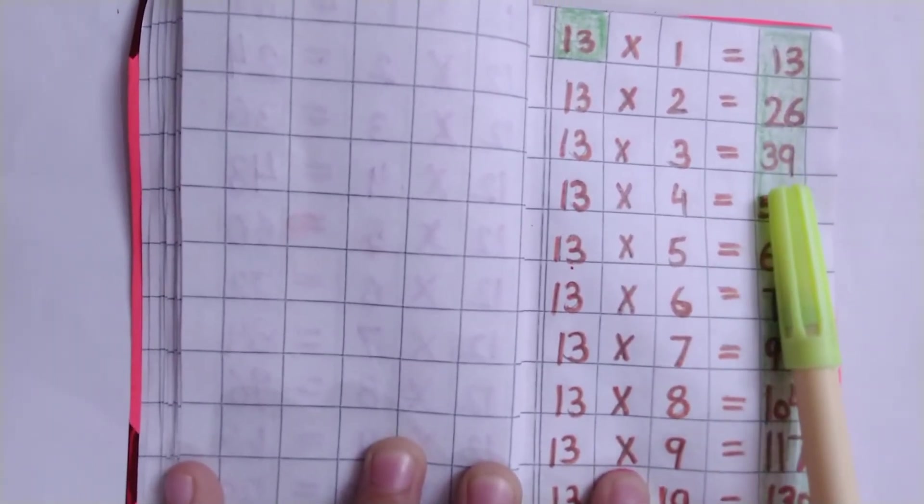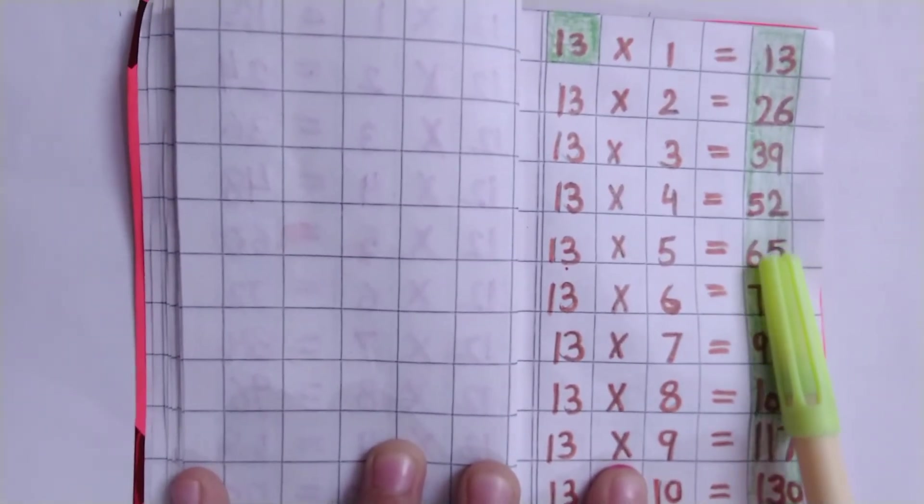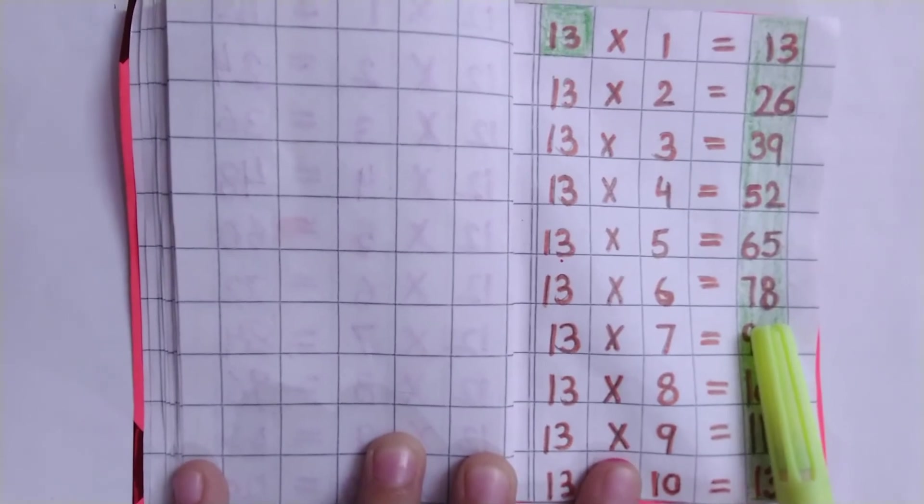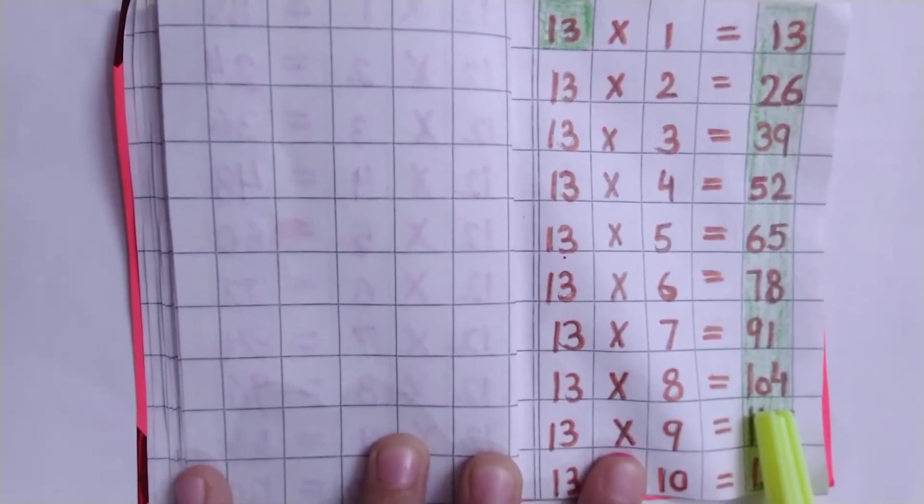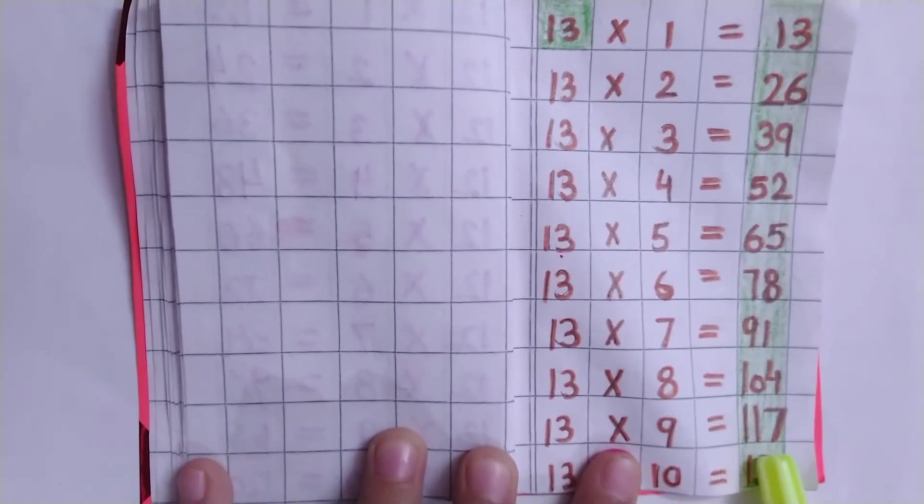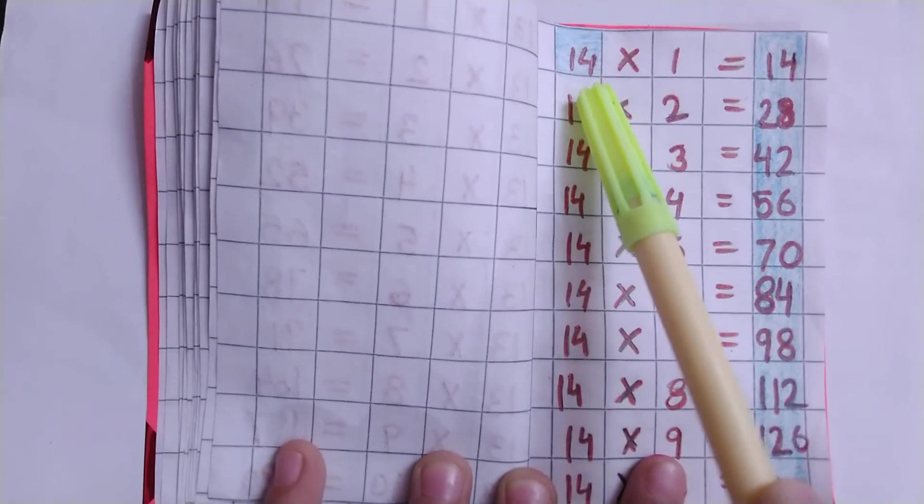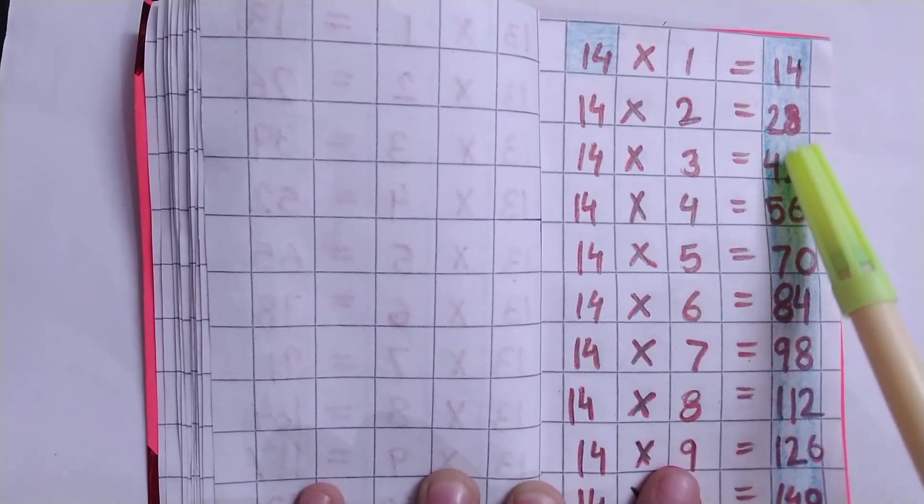Table of 13: 13×2=26, 13×3=39, 13×4=52, 13×5=65, 13×6=78, 13×7=91, 13×8=104, 13×9=117, 13×10=130.